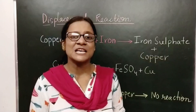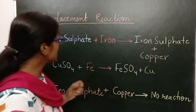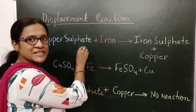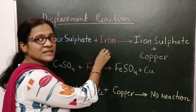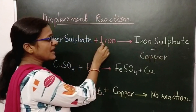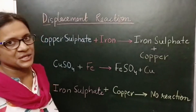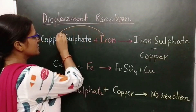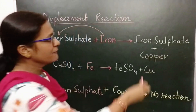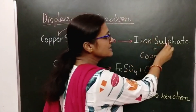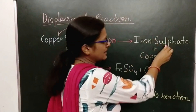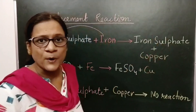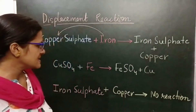This is a displacement reaction. When the copper sulphate is reacting with iron, this iron being more active is replacing the position of the copper and forms iron sulphate, which is green in colour, and copper is deposited on the iron nails.